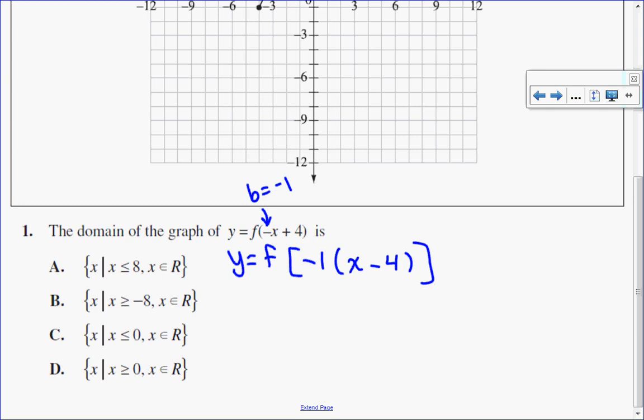So this is the function that I'm talking about. So this negative 1 tells me that I have a horizontal reflection in the y-axis. x minus 4, remember horizontal lies, tells me that I'm moving my graph 4 units to the right.